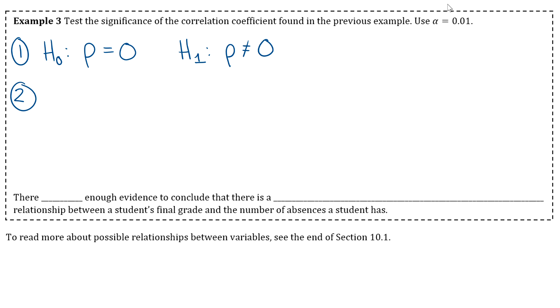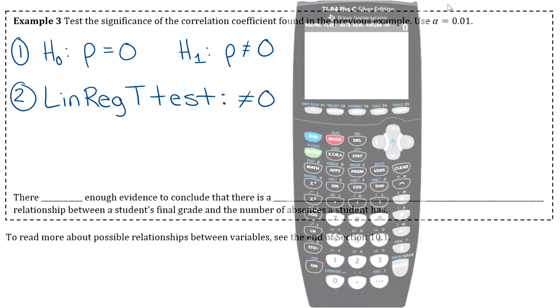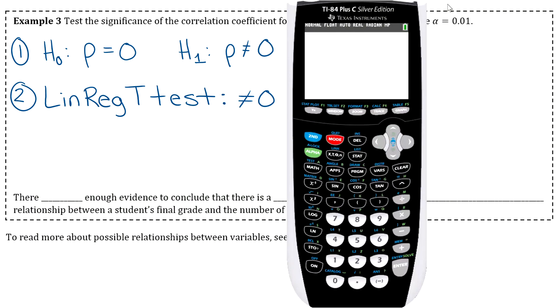And then step 2 is to get your p-value. You're going to go to linear regression t-test. And then you do want to make sure you select the right sign when you're in there. You'll go to stat, go over to test, and then it's pretty far down, I think it's like f. So keep scrolling down until you see linear regression t-test.